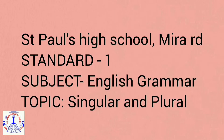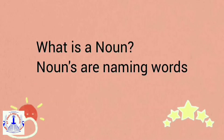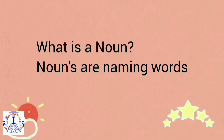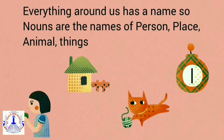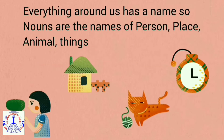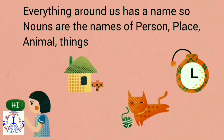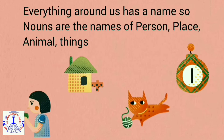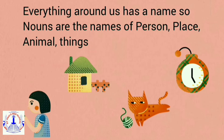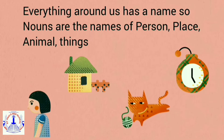Our topic for today is singular and plural, also known as one and many. What is a noun? Nouns are nothing but naming words. Everything around us has a name. So nouns are the names of a person, place, animals, and things.